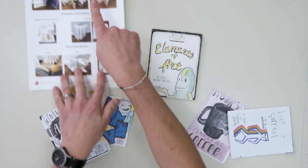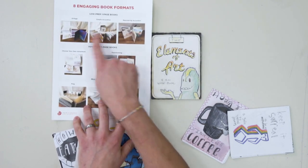In our last video, we overviewed some of the options that you have for your book formats. We're gonna start with those low-prep, one-page books to get started. Now, you're gonna find this at the top of those eight engaging book format sheets, the top three.